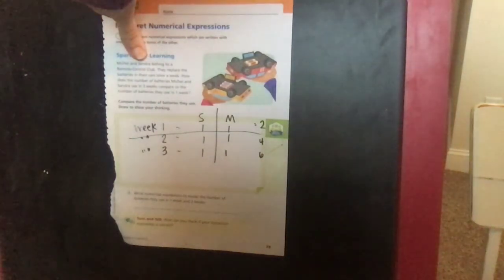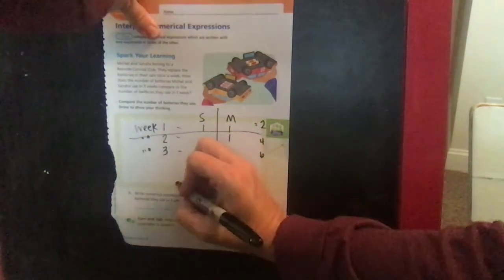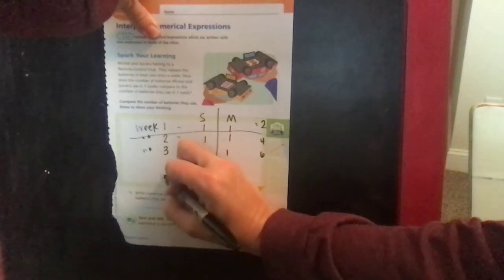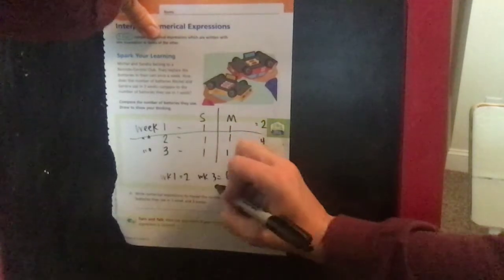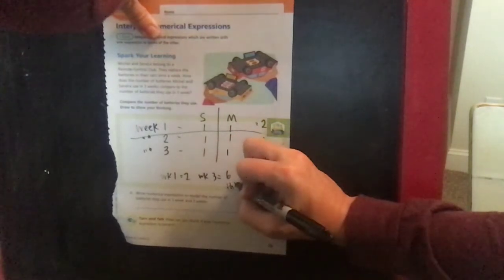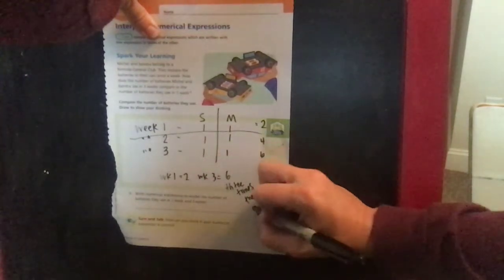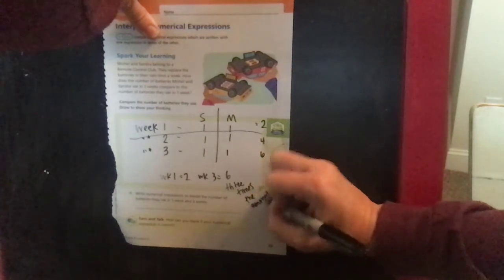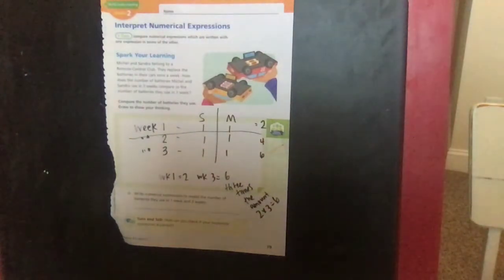So you could do different things. You could say in week one they used two batteries, week three they use six. You could say they used three times the amount, because two times three is six. And we see they had two and then they had six, so they did three times that amount.